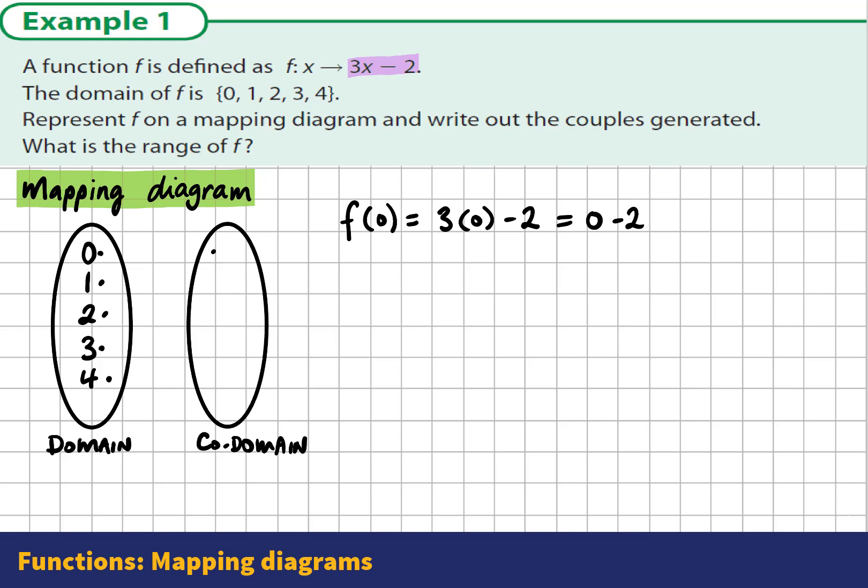Three zeros are 0 minus 2. 0 minus 2 will be negative 2. So our first output value is negative 2. That 0 is mapped onto negative 2.